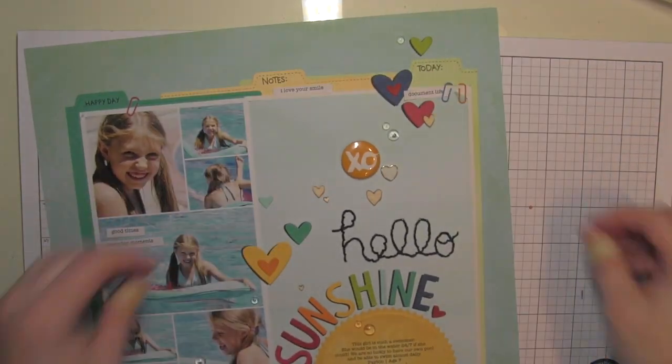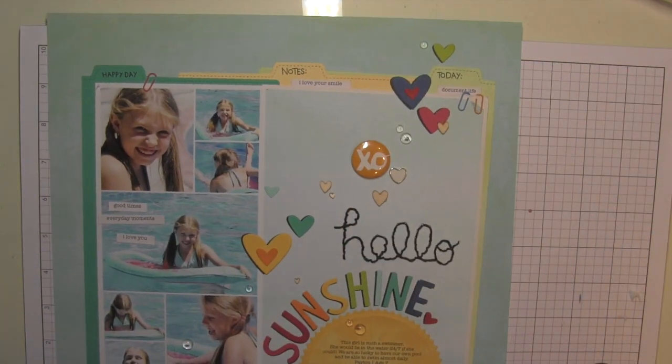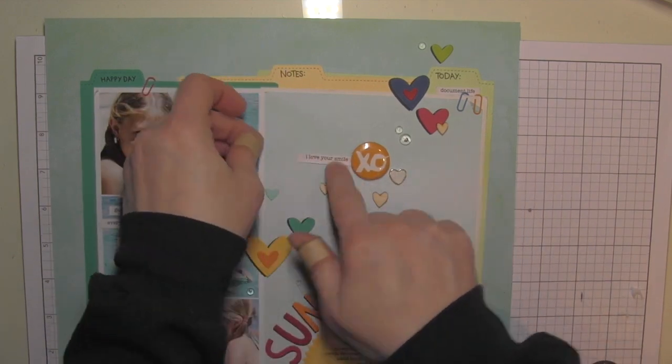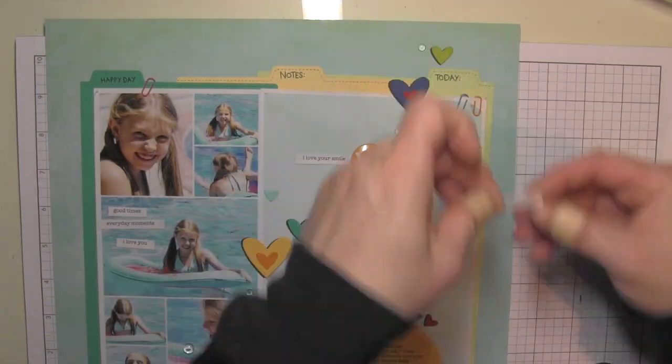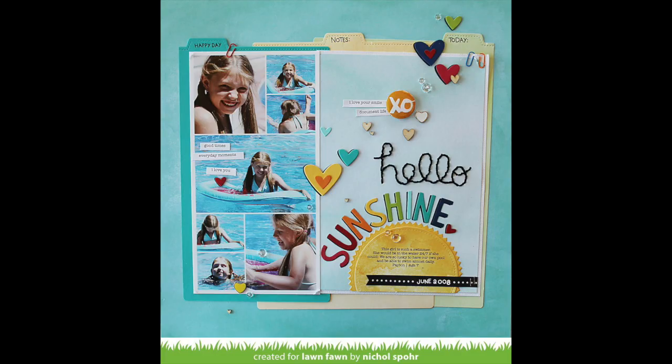I will go ahead and add just a couple more things and this scrapbook page layout featuring the brand new Lawn Fawn Watercolor Wishes pattern paper collection as well as lots of other dies and stamps from Lawn Fawn is finished.